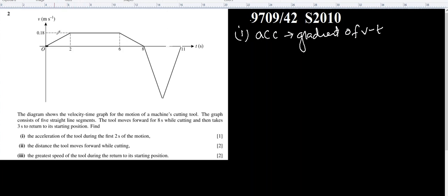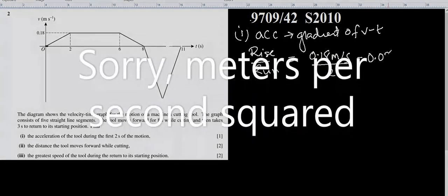This is a VT graph, that means we have to find the gradient of the first two seconds, the gradient of this tilted line. We know gradient is rise over run. How much has it risen? It has 0.18 meters per second, and how much is the run? Two seconds is the run, so the answer will be 0.09 meters per second squared.